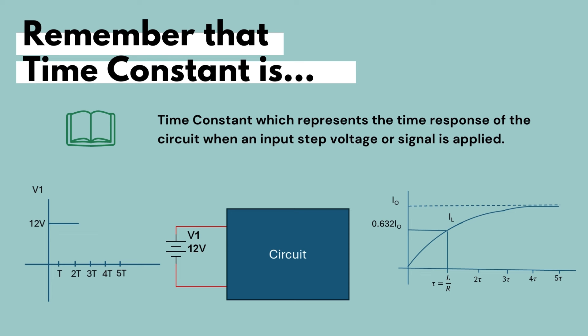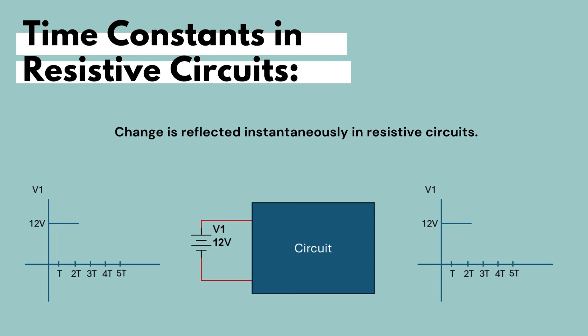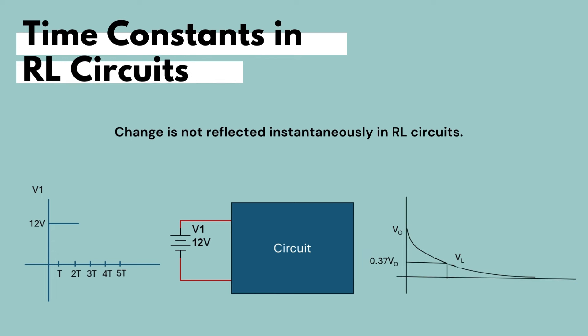So then you can think of the time constant of a circuit as the way that we can describe the transient response of the circuit's currents and voltages over a set period of time. Unlike purely resistive circuits, where the change in input is directly reflected to the output, changes in RL circuits need time to be reflected in the output.